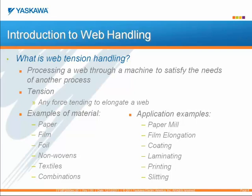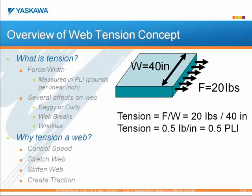Some application examples include paper mills, film elongation, a coater, a laminator, printing, or splitting. Tension is defined as a force tending to elongate a web. A force divided by the width of the web equals tension, so the units for this measurement are given in PLI — pounds per linear inch. Tension has several effects on webs, including flatness, which creates a bagginess or a curl, the geometry, the length, width, and thickness of the material itself, the positioning and registration, web breaks, winding quality, and wrinkles.